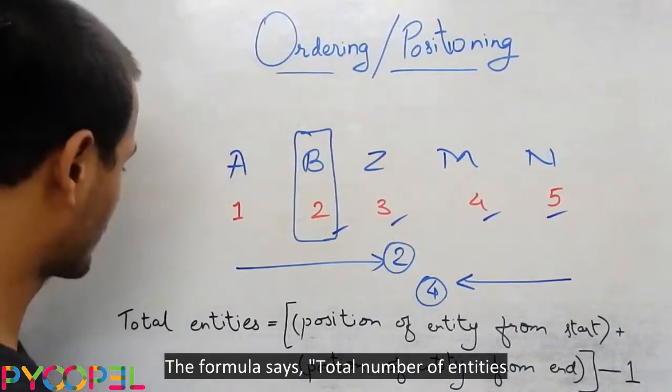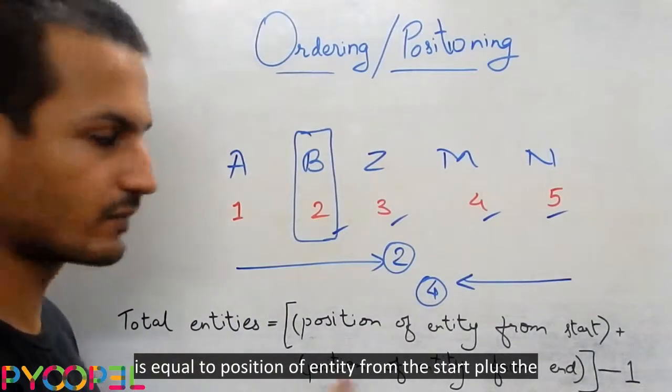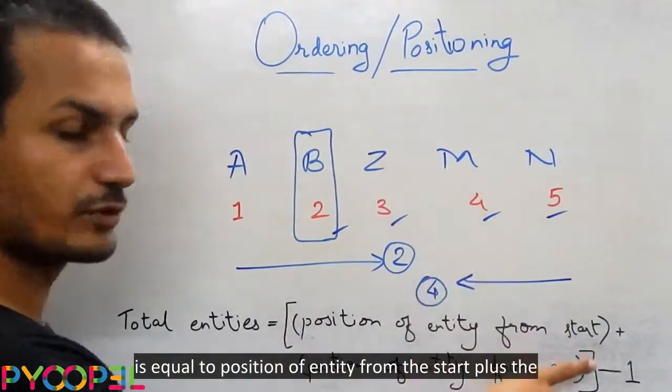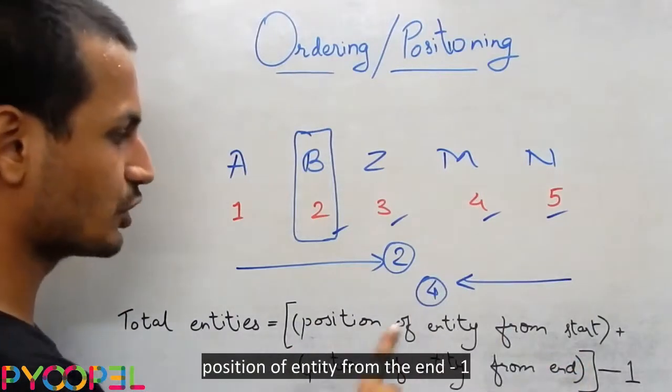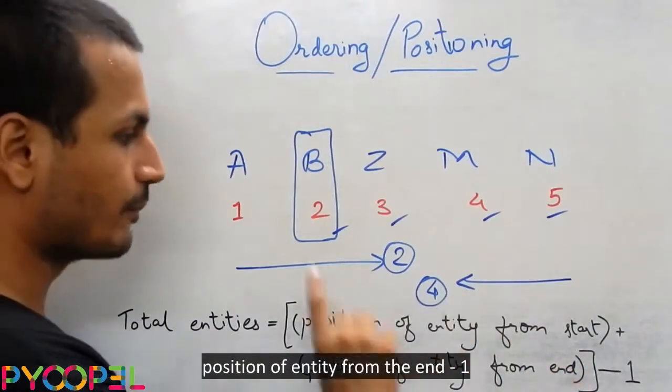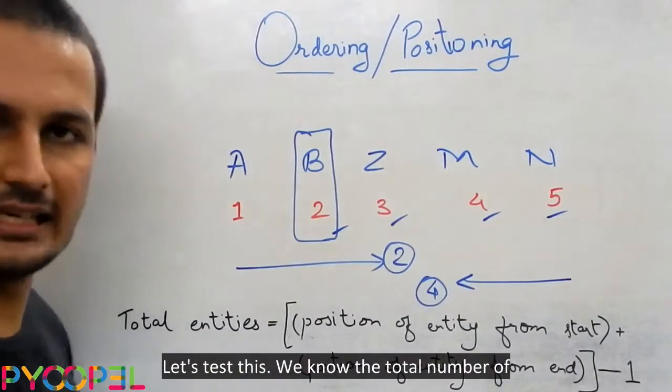The formula says total number of entities is equal to position of entity from the start plus the position of entity from the end minus one. Let's test this.